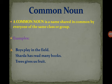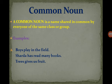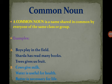Next: Trees give us fruit. There are many trees — apple trees, mango trees, banana trees. We generalize and use 'tree' as a common noun for all trees, and 'fruit' as a common noun for all fruit. These are commonly used as common nouns.